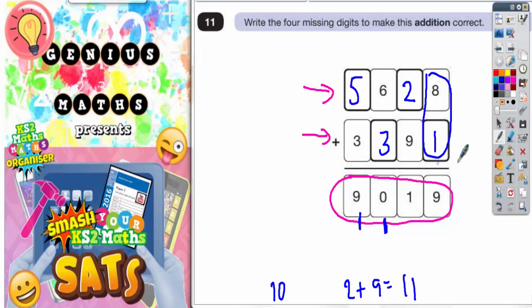Now just as a check, it would be a good idea to actually redo this sum here to see if you do actually get the answer on the bottom row. So we're going to do this entire sum again. And we're going to see if we get 9,019. So let's have a look.